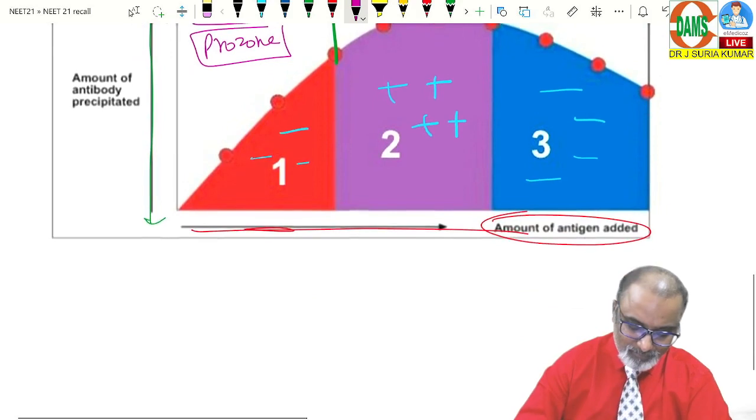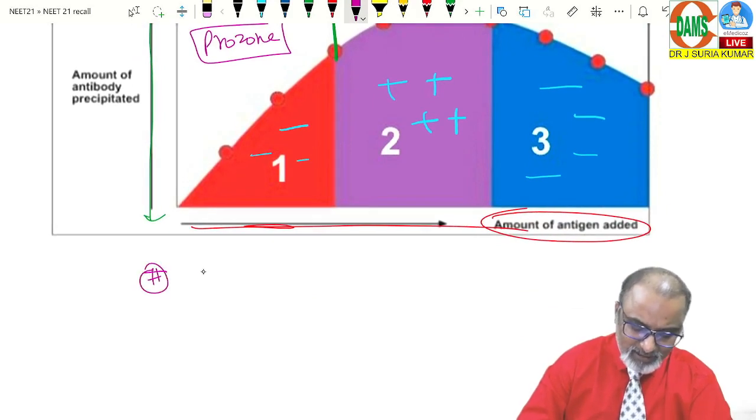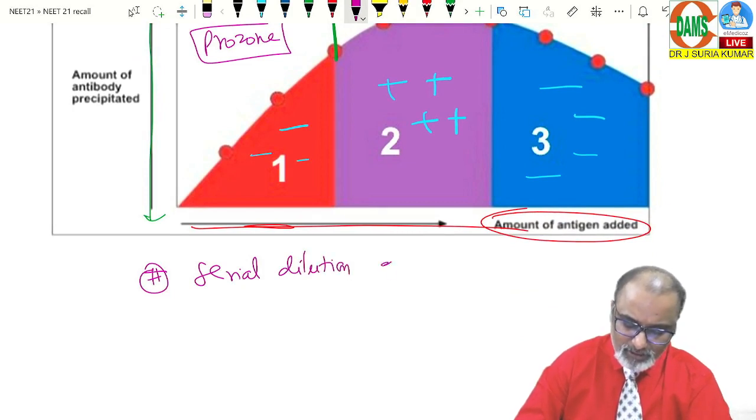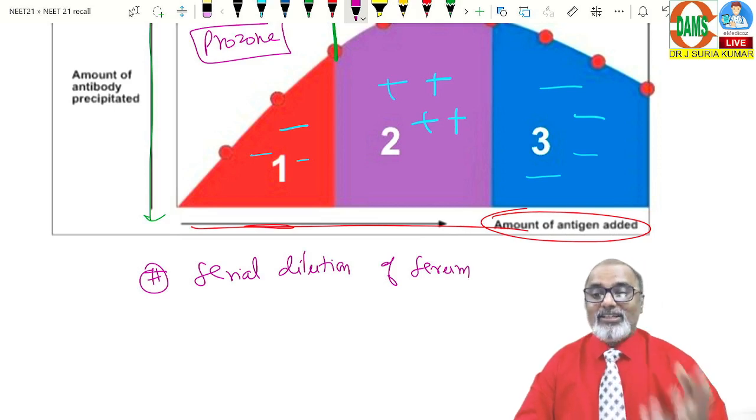How to overcome? You need to overcome serial dilution. Serial dilution of the serum. That's the best method. Or you can add extra antigen. That's not possible. Difficult. You can dilute the serum.